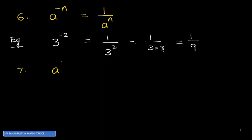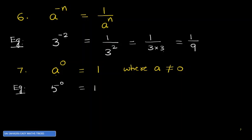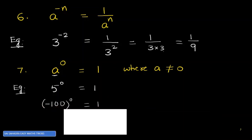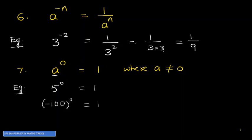Law number 7: when the exponent is 0, something raised to the power of 0 is always equal to 1, provided the base is not equal to 0. Examples: 5 power 0 equals 1; minus 100 power 0 equals 1. Any number raised to the power of 0 is always 1, except 0 power 0. So x power 0, y power 0, z power 0 — all equal 1. These are the seven important laws of exponents covered in this class.